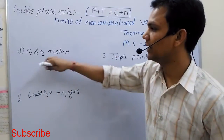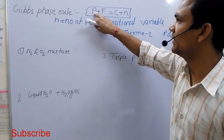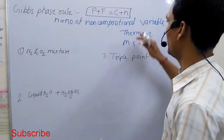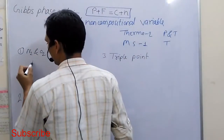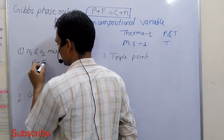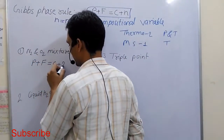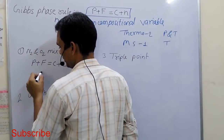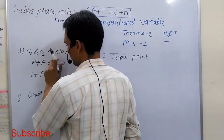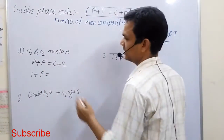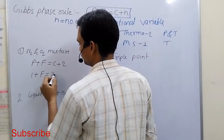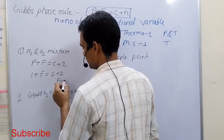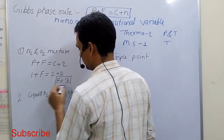For understanding this rule, consider an example of an N2 and O2 mixture. Modifying the formula for thermodynamic conditions: P plus F equals C plus 2. Number of phases is 1. Number of chemical components is 2 (N2 and O2), so F equals 3. The degree of freedom for this mixture is 3.